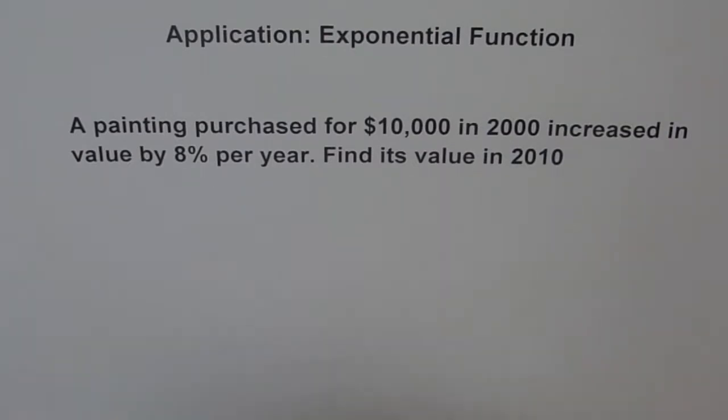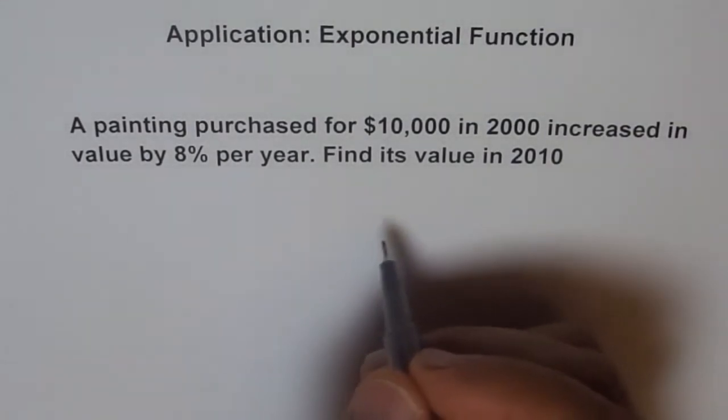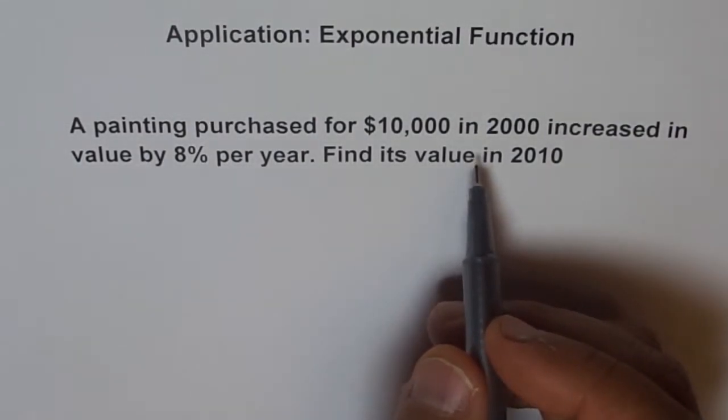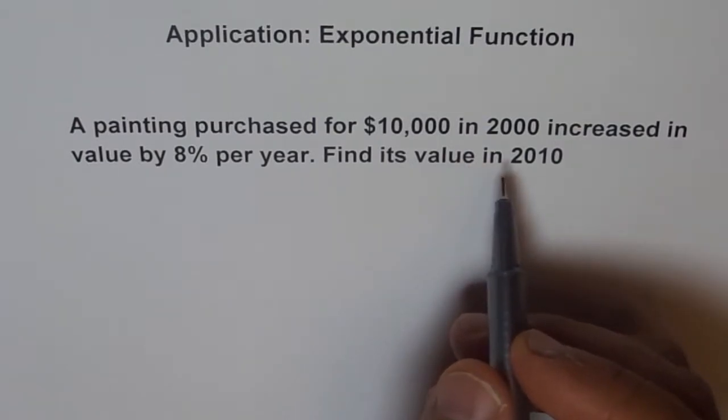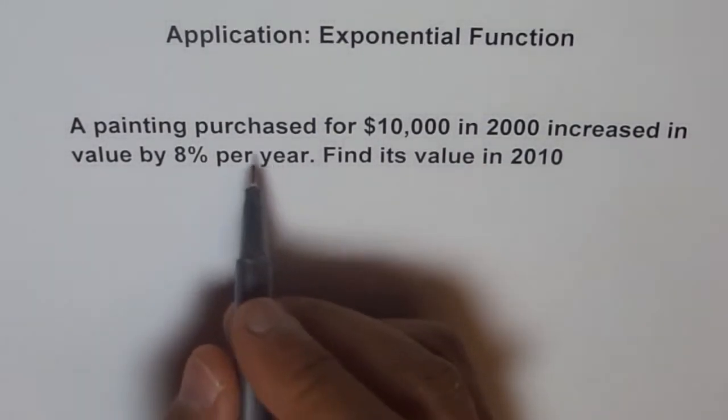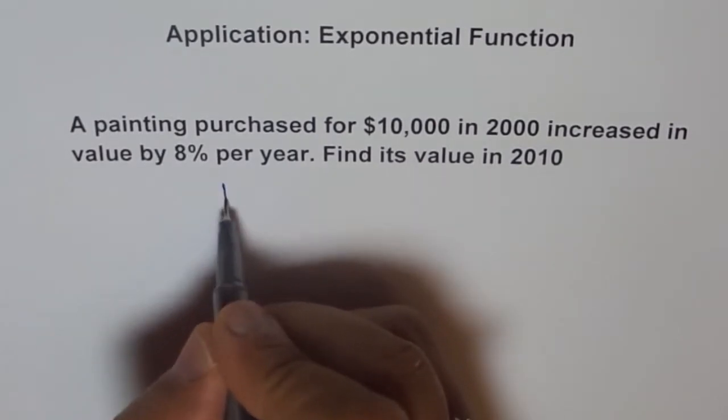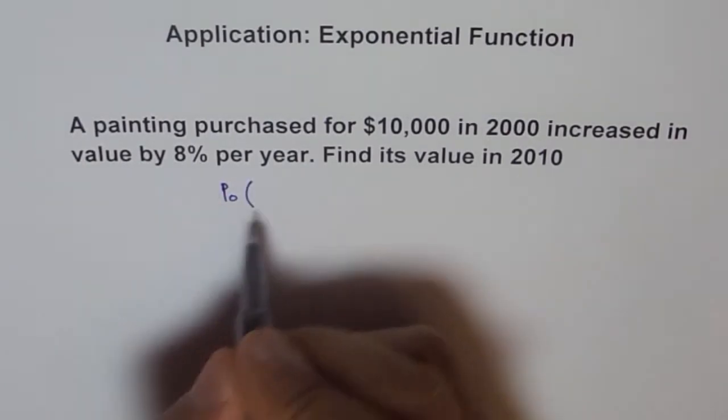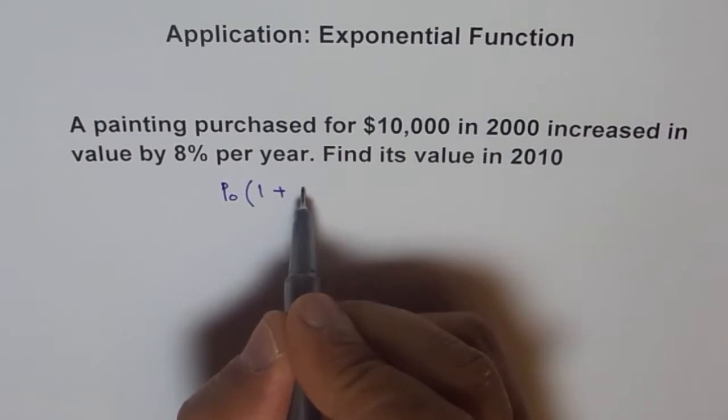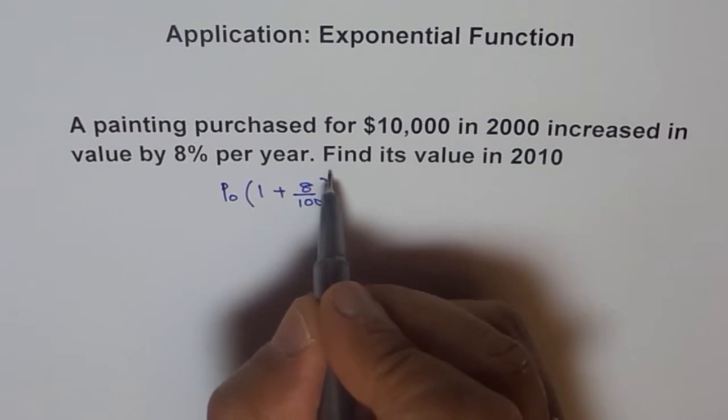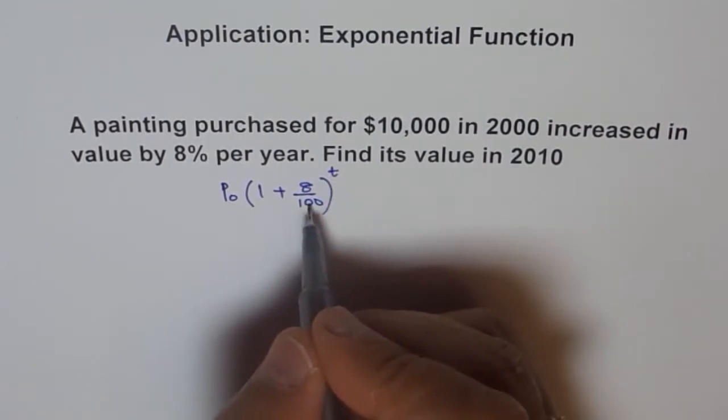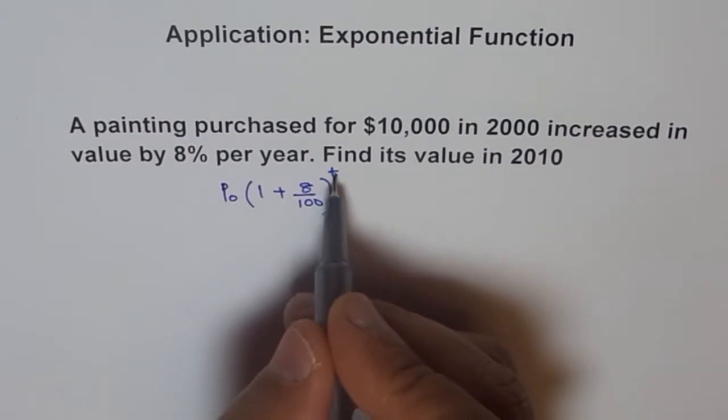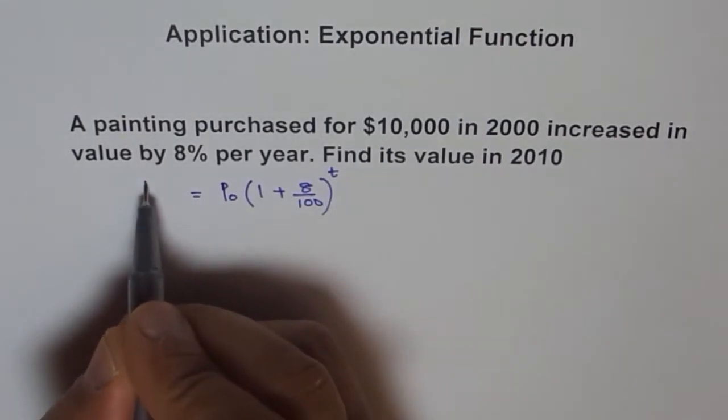Now as you know, our formula for appreciation or exponential growth in this case is, let us say P is a purchase price, P0. Let us say P0 is a purchase price. Now what happens to this purchase price? It increases by 8%. That means 1 plus 8%. 8% is 8 over 100. Every year, so to the power of T. So next year again by that much. Next year again by that factor. So it increases every year so we get T on the top to give us the final value P.